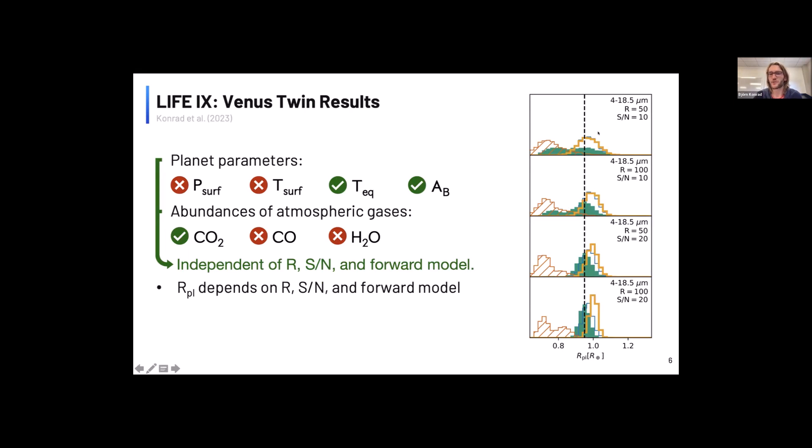And this is what we show here in the figure on the right. I want you to focus on the green histogram, which is basically the radius estimate for the cloudy model, so the model with the opaque clouds, and the yellow histogram, which is the radius estimate for the cloud-free model.